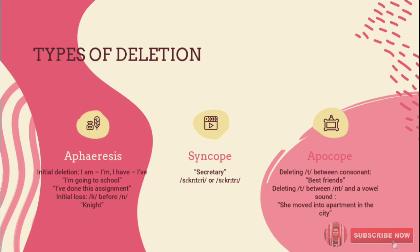The first type of apocope is deleting T between consonants. This happens when a word ending in consonant T links into a word beginning with a consonant — the final T of the first word is often deleted. For example, 'best friends' is pronounced as 'bes' friends', not 'best friends'. In the sentence 'The twins are best friends', the T in 'best' is not pronounced.